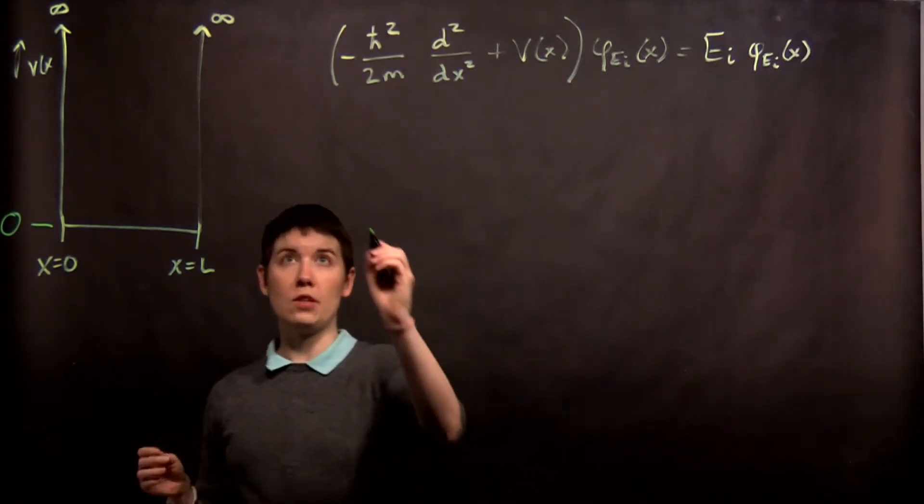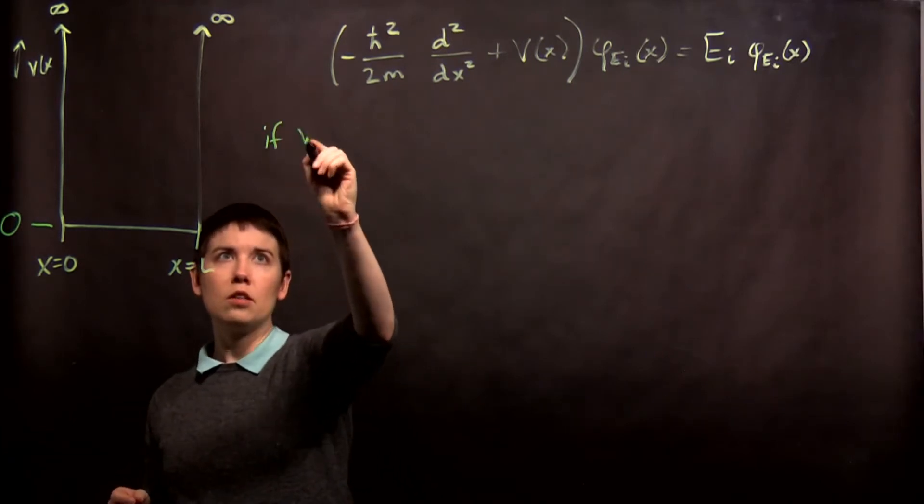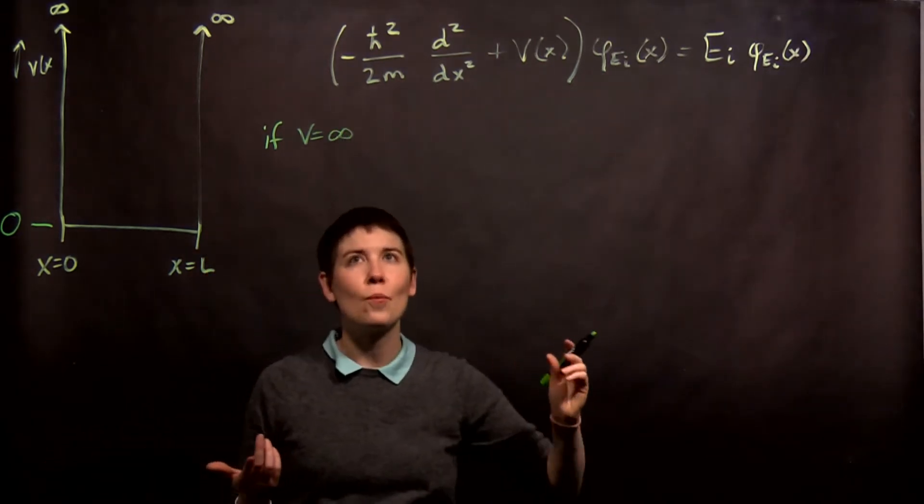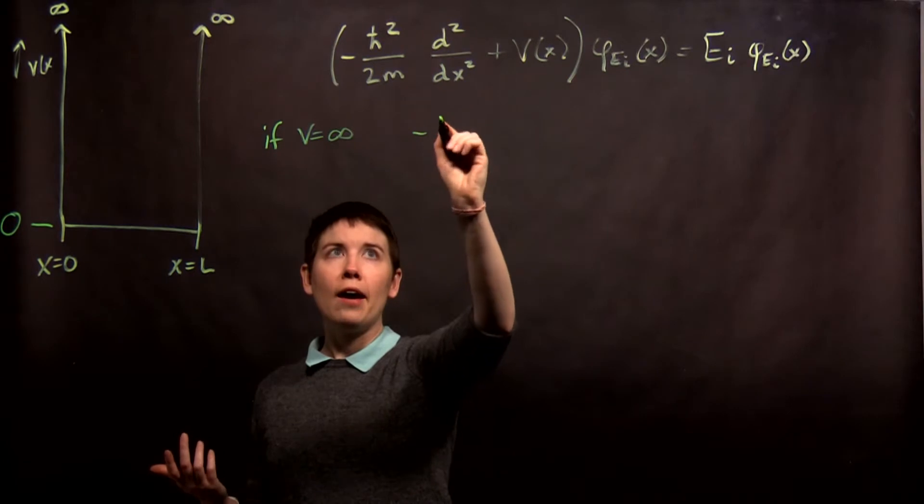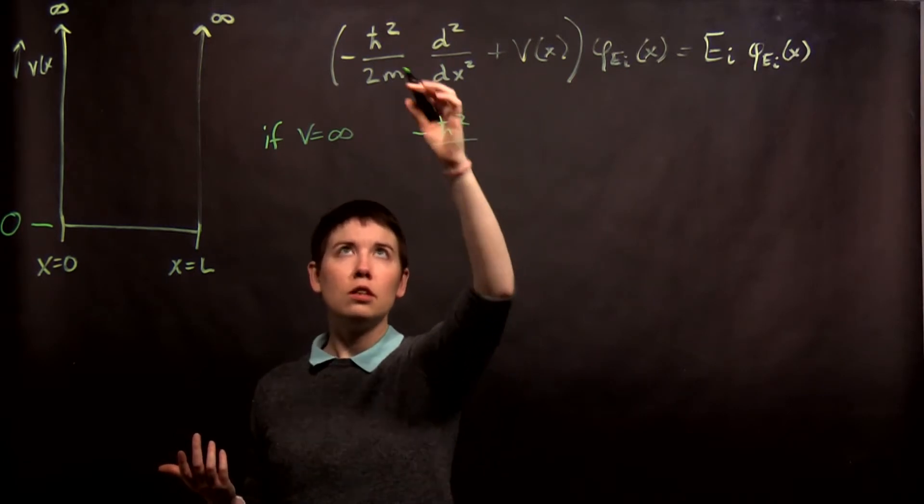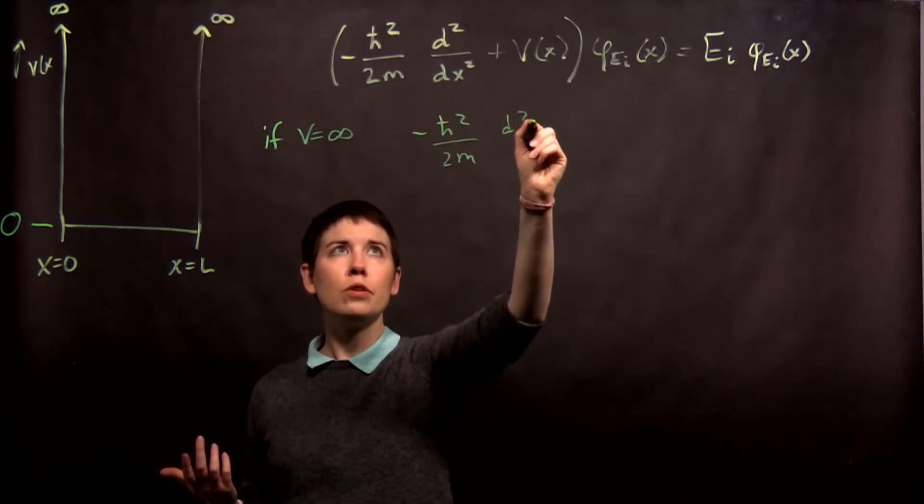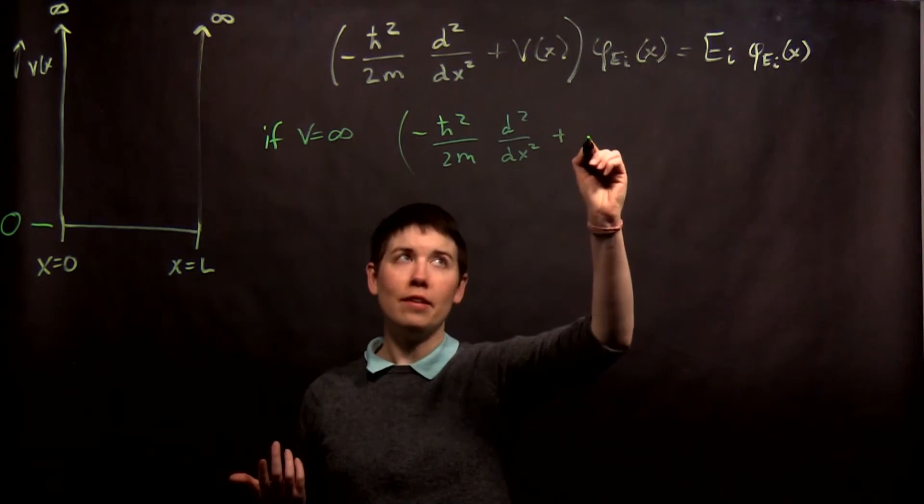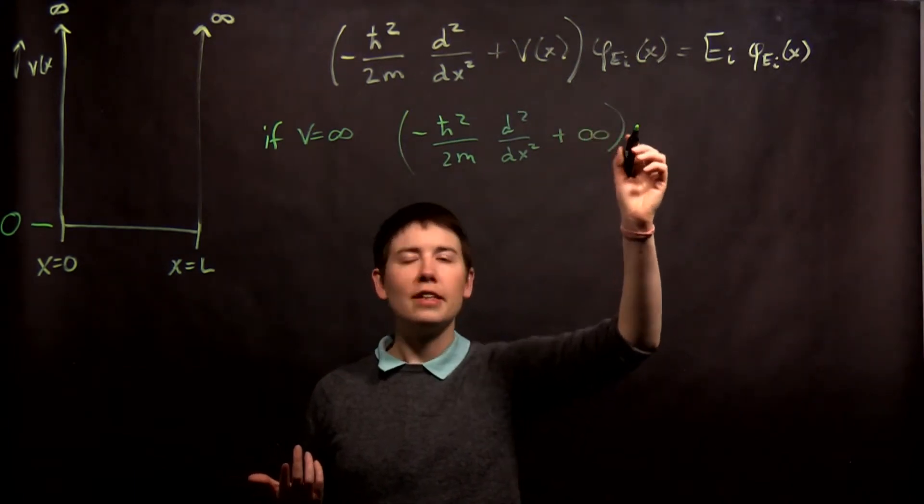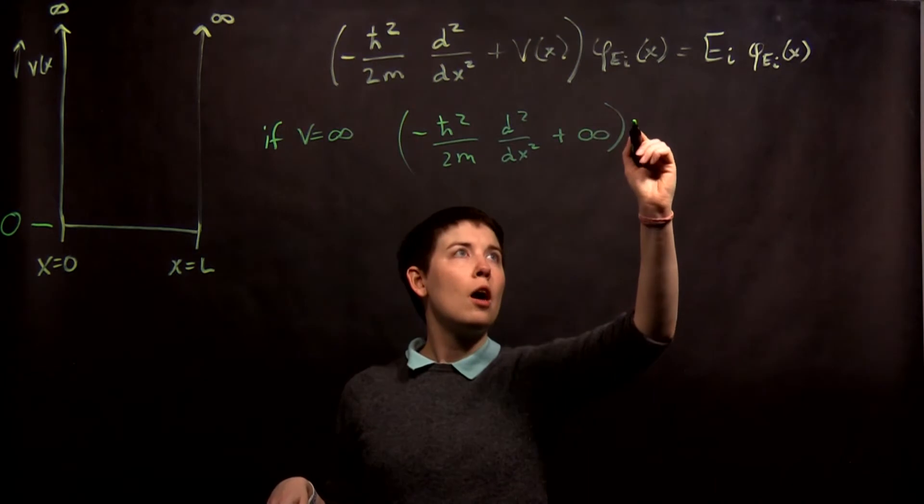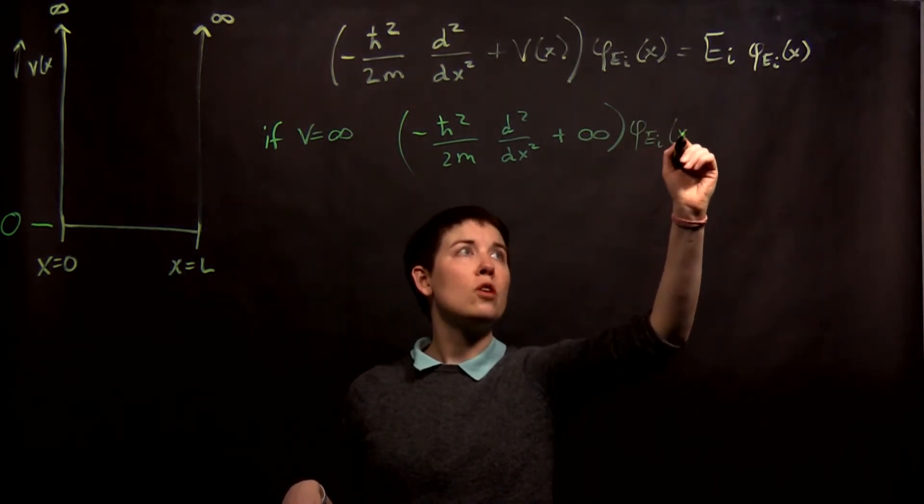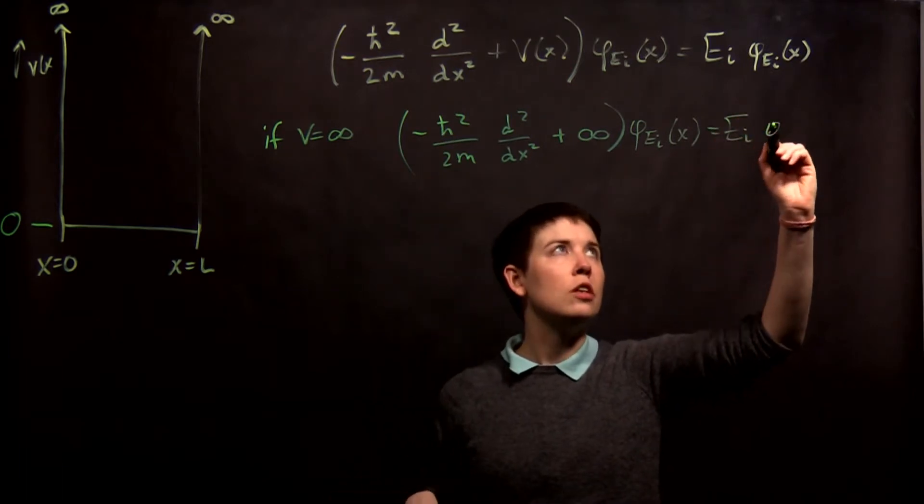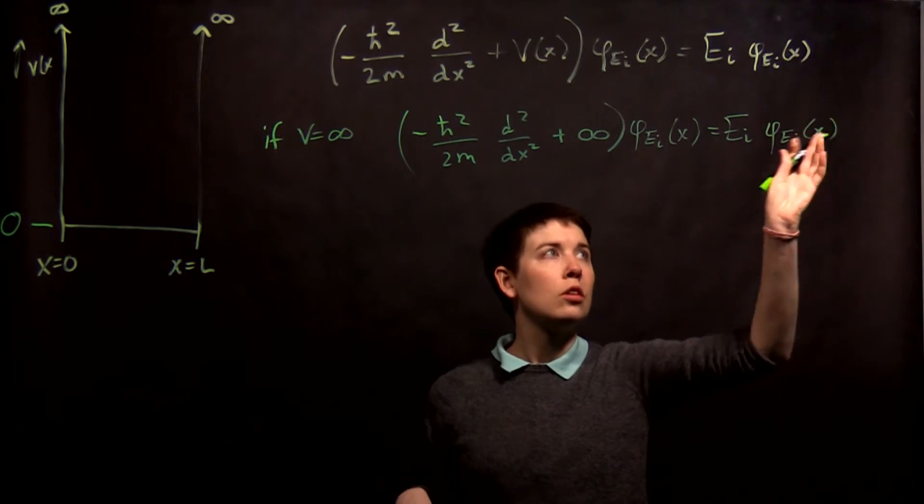So let's break this into two different cases. One is if V, and you can call this the limit as V goes to infinity, or V equals infinity in physics words. So if V equals infinity, we have that the negative h-bar squared over 2m, second derivative with respect to x plus infinity of our energy eigenfunction, which is the thing we're going to try to find, equals the energy of that eigenfunction, and then that function itself.